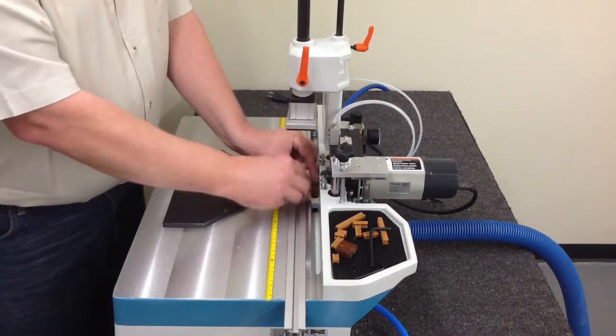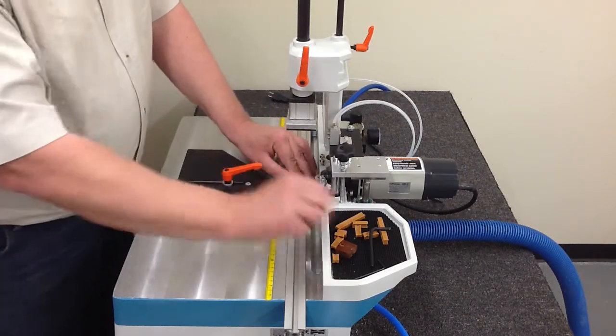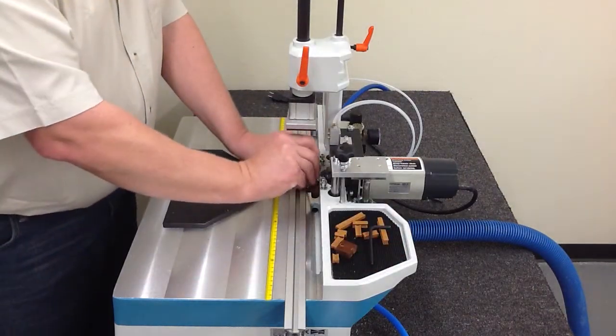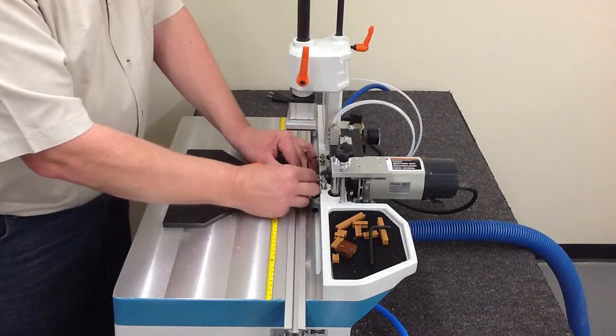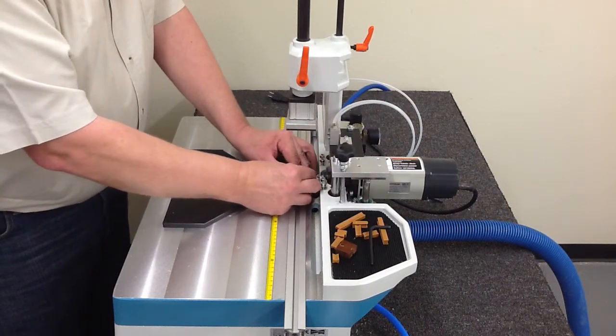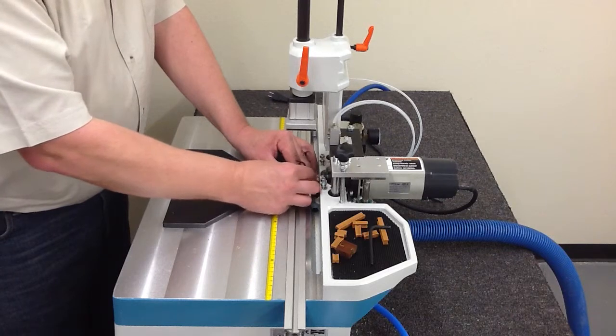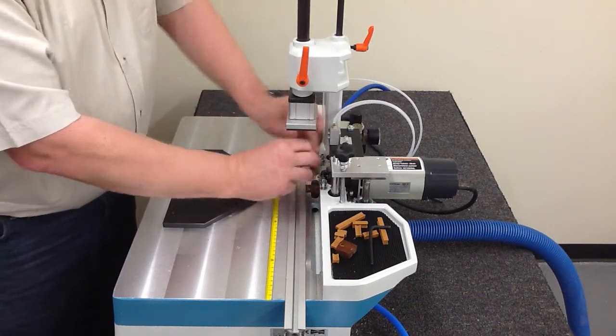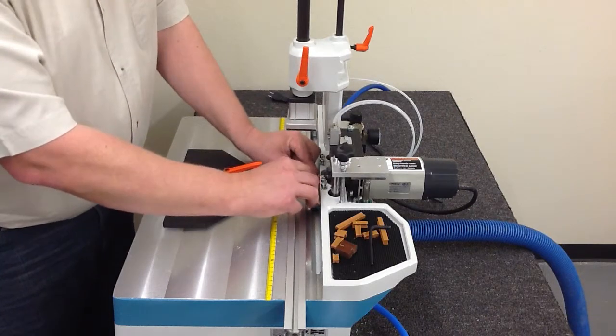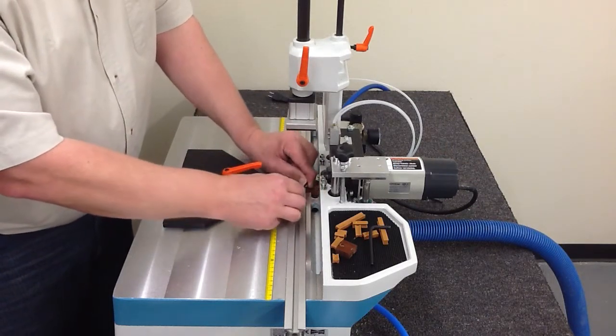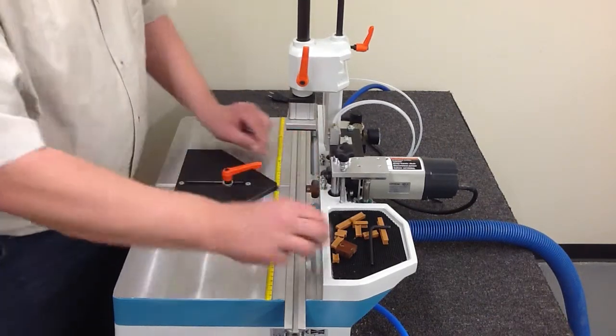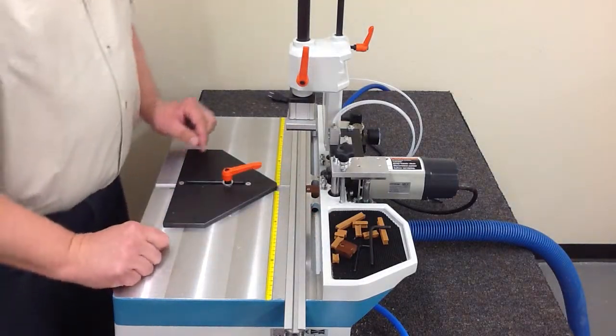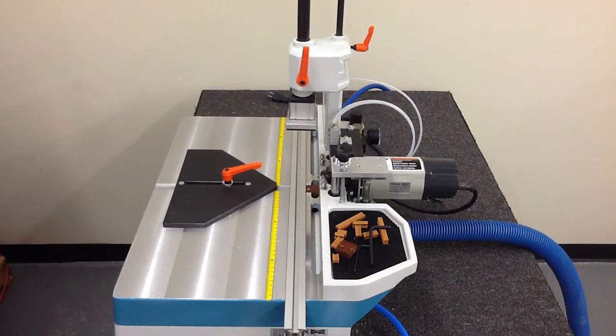So what we do is we reinstall the new chip breaker. A little screw here. Nice and tight. I'll be sure that that bolt is fairly tight. Otherwise that chip breaker may wiggle around in there.